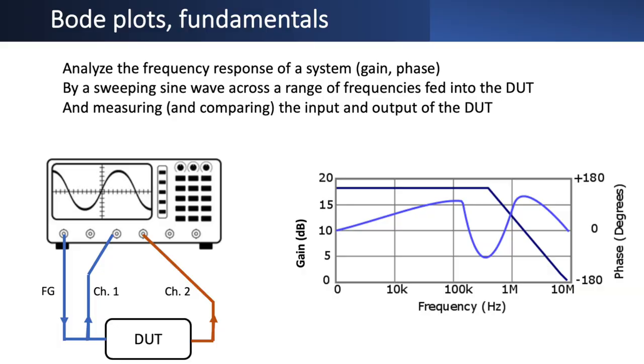It's a pretty straightforward methodology. We use a device under test, provide a swept frequency input, and measure the output to characterize the response in terms of both gain and phase. We analyze frequency response by sweeping a sine wave across a range of frequencies into the DUT and measuring its input and output. These two parameters — gain and phase — can then be plotted graphically, giving us the well-known Bode plot.